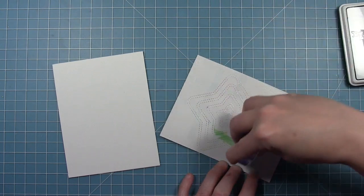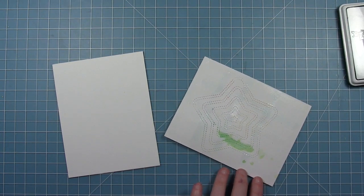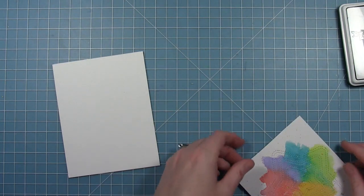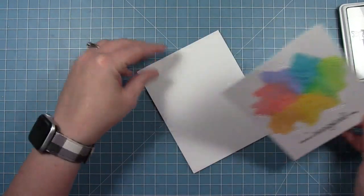Now I'm going to add this whole panel to a card base and I'm putting a lot of adhesive on it because it's a little warped from all the water and the heating that I did so this will help it lay flat once it's on this card base.